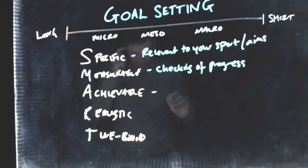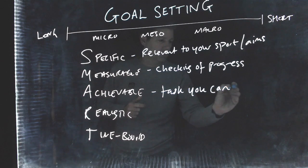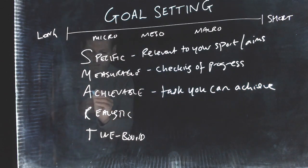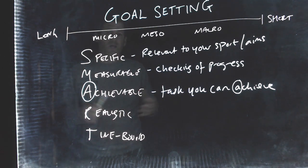Whereas achievable is slightly different. Okay. So achievable, we talk about a task that you can achieve. So it is realistic to achieve it. I always remember this because you've got A for achievable and A for achieved. So it's a task you can actually do. Something, yeah, it's within your capabilities and it's not an unrealistic goal.